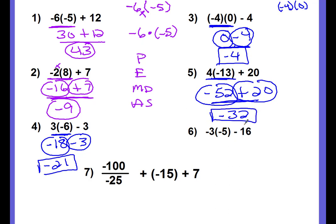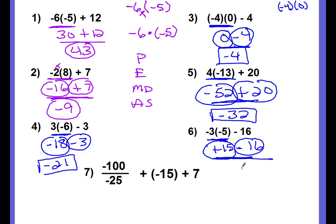And number 6, the last one: negative 3 times negative 5 is a positive 15. Bring down the minus 16. Circle the integers and their signs — signs are different, so subtract: 16 minus 15 is 1. There are more negatives, so the answer is negative 1.